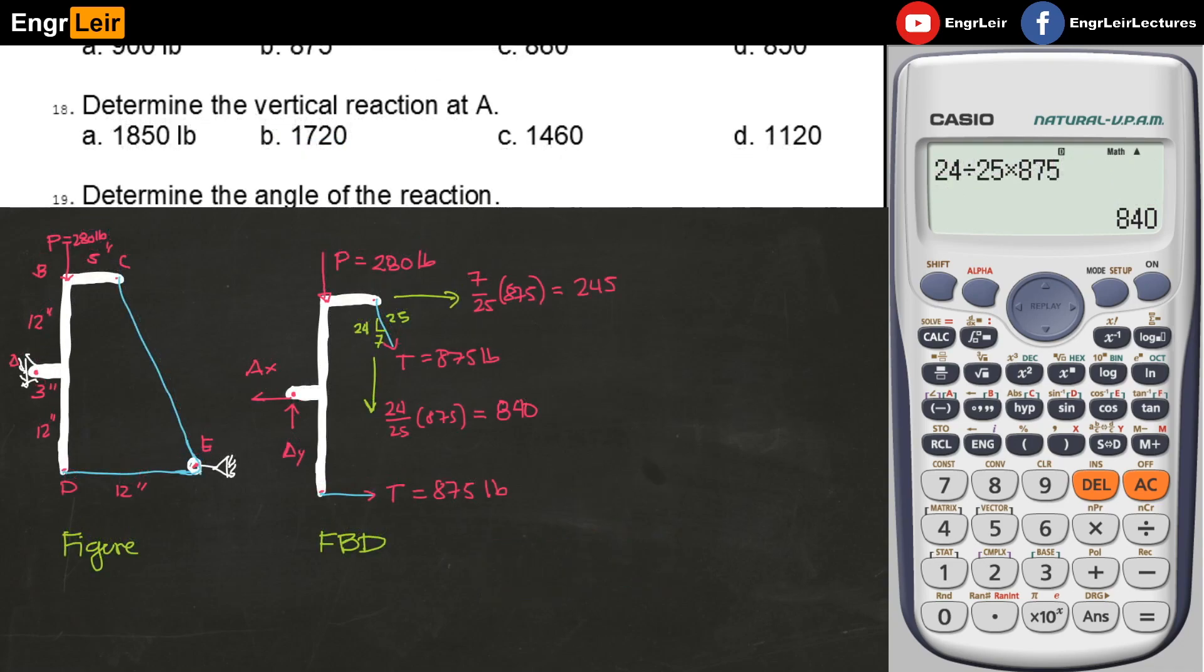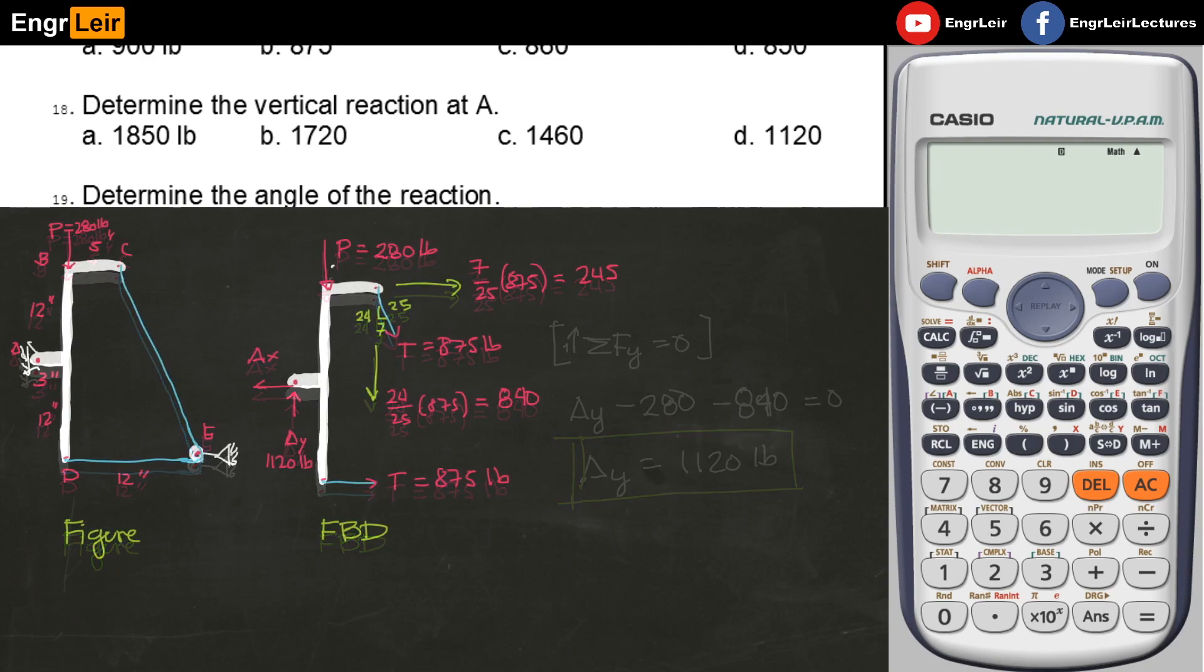Next problem for the situation: Determine the vertical reaction at A. Again, this is the free body diagram, and I've written the values of T and the X and Y components of T at the top and the T at the bottom. To get the vertical reaction at A, it's simple. I'll just sum the forces vertical, or forces Y. Taking upward as positive, I will get A sub Y minus 280 pounds for P. This has no vertical component, so this is 24 over 25 times 875, or 840, minus 840 must equal zero. And A Y must equal 1,120 pounds.